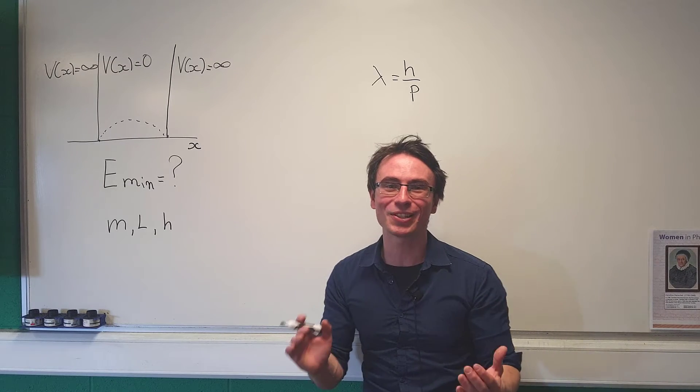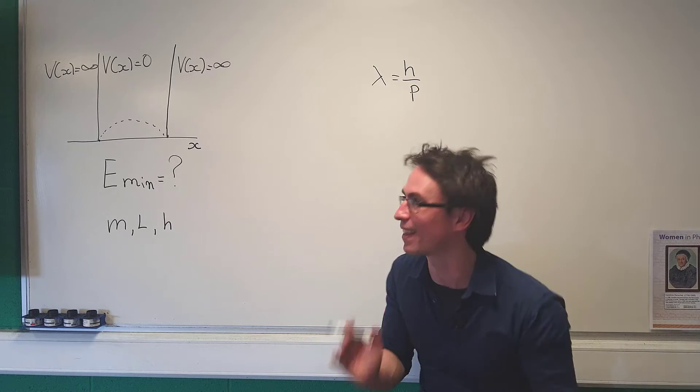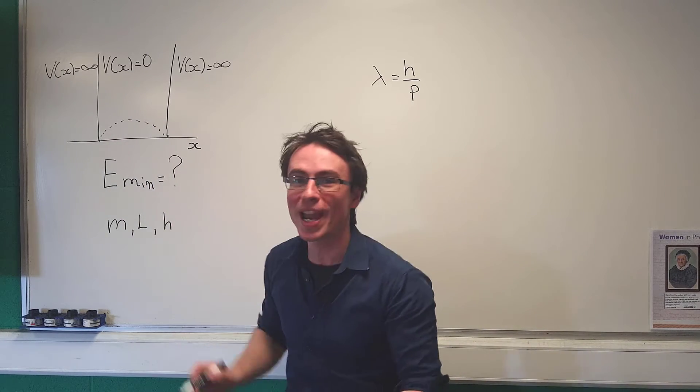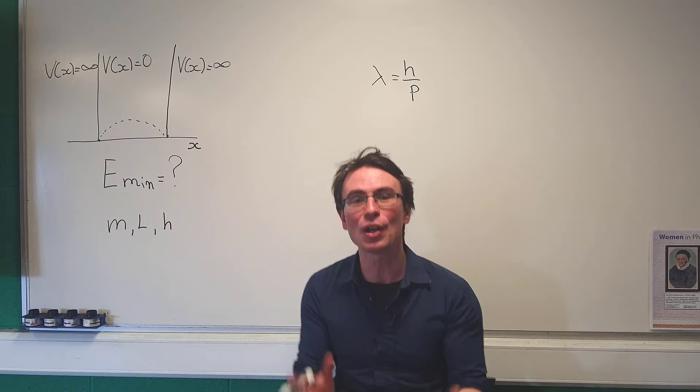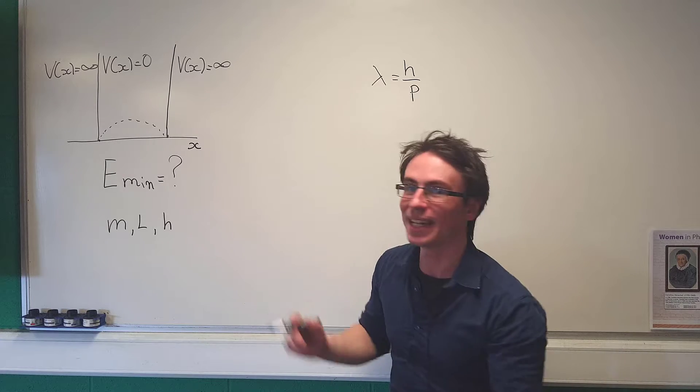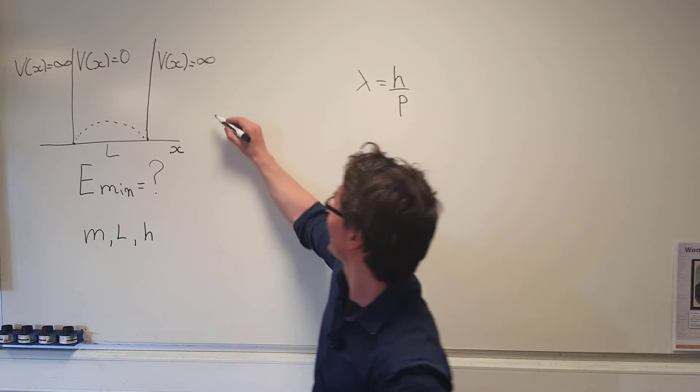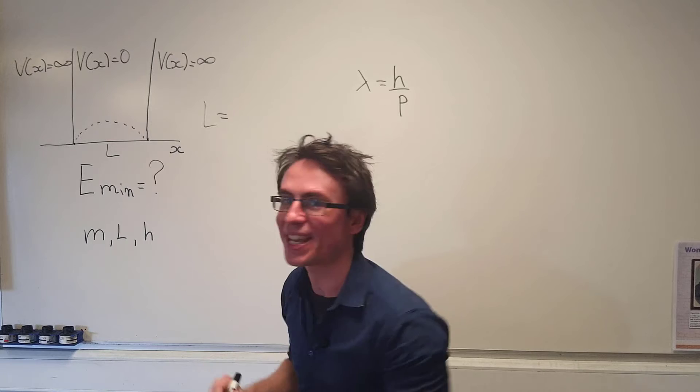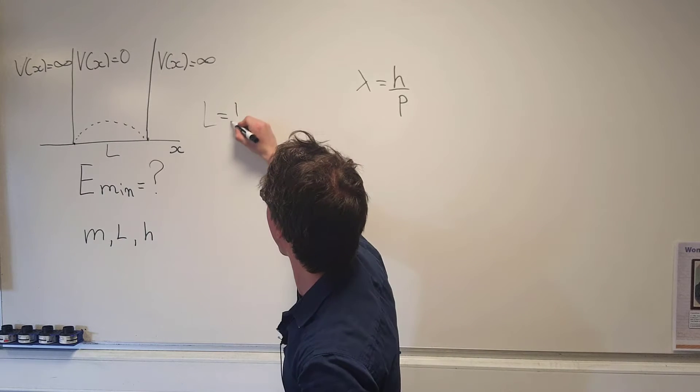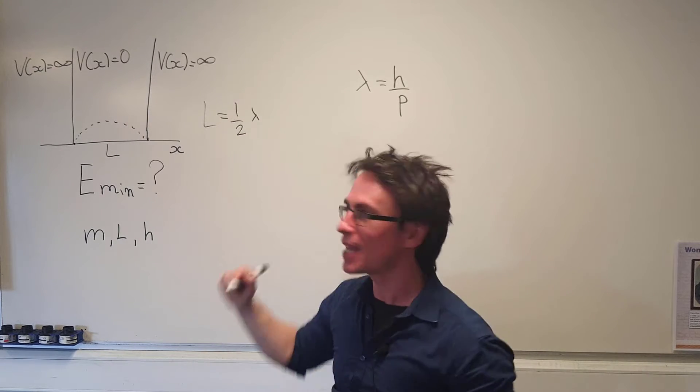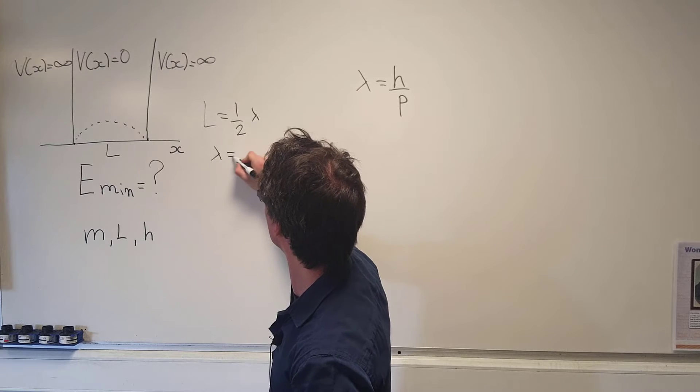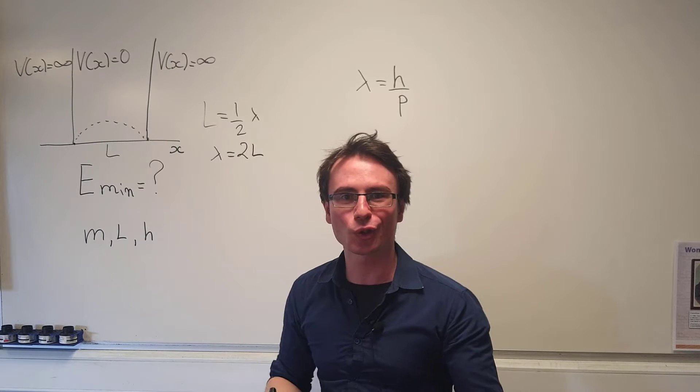The lowest possible energy state will be such that half of the wavelength is contained within the length. This of course means that the length will be equal to half of the wavelength, meaning that our wavelength will be equal to 2L.